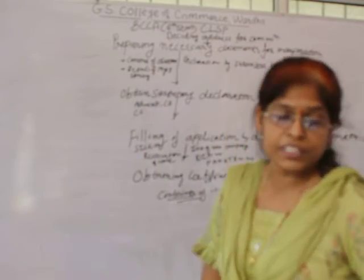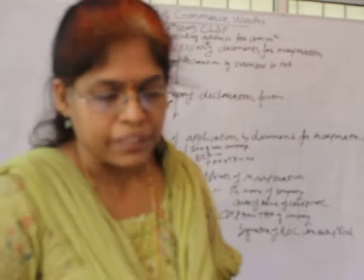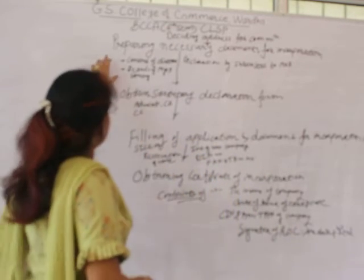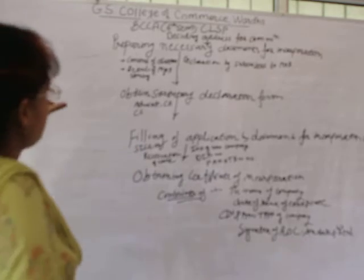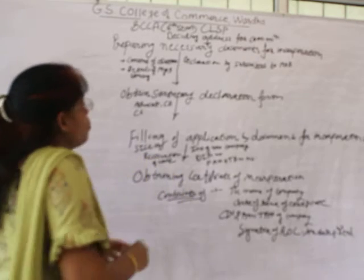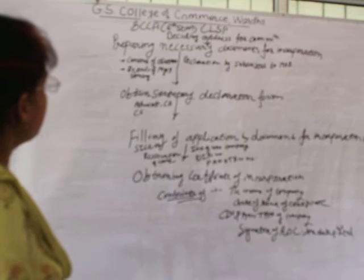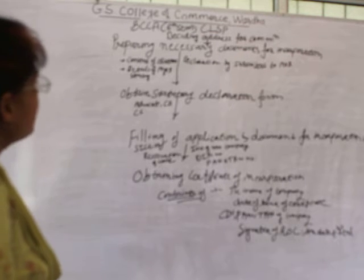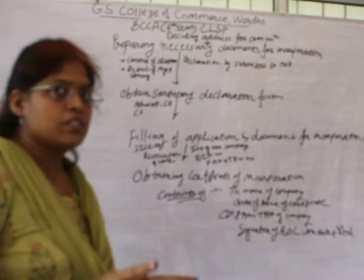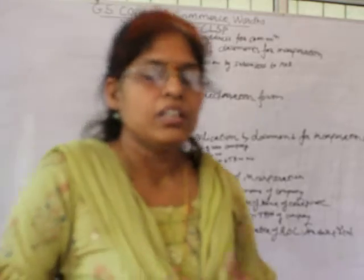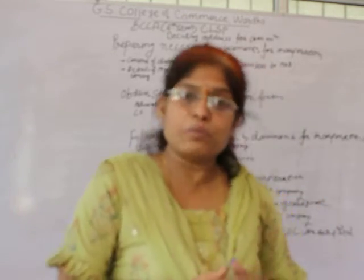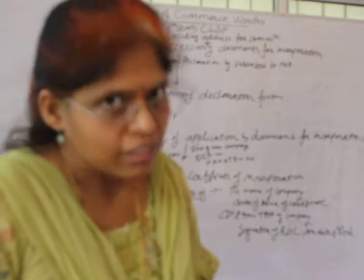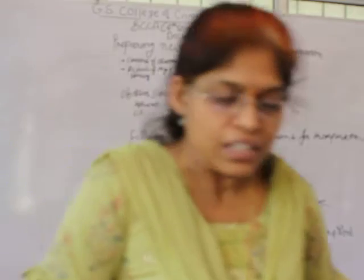Today we start with preparing the necessary documents for incorporation. While preparing the documents for incorporation, what has to be taken care of? First, the consent of directors — the persons who want to be the first directors. The promoters themselves are typically the first directors, but written consent must be received from each and every promoter who is going to be a first director, confirming they are ready to act and work as directors.